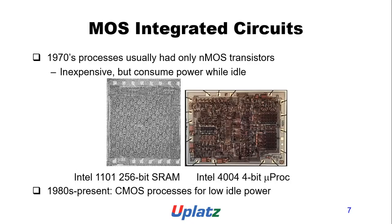MOS integration grew through the 1970s. Processors initially used only NMOS transistors, which were inexpensive but consumed power while idle — for example, the Intel 1-kilobit SRAM and Intel 4-bit microprocessor. In the 1980s, CMOS replaced NMOS for low idle power.